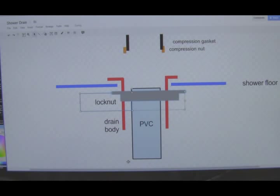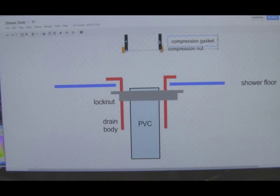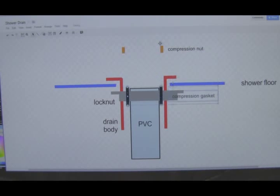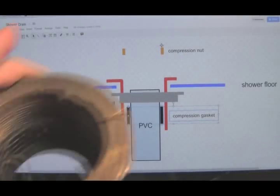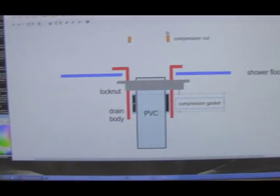So this is a caulkless drain. It doesn't require any welding or caulk or any sealant between the drain body and the PVC. And the way they make a seal is there's this compression gasket, it's basically a sleeve of rubber which you can see right there. And that thing goes around the PVC pipe.